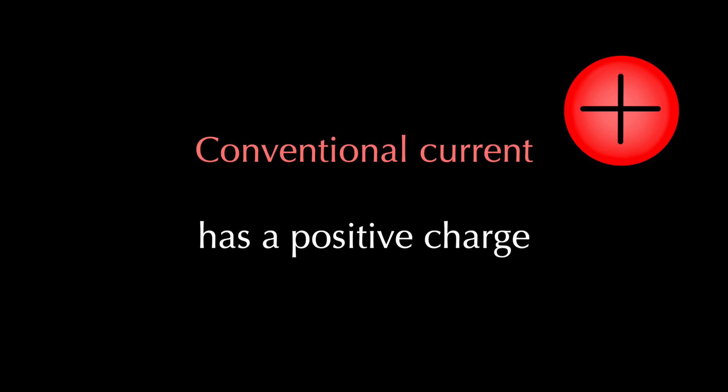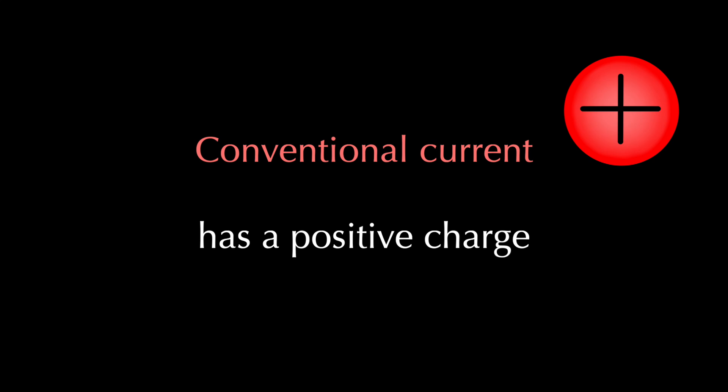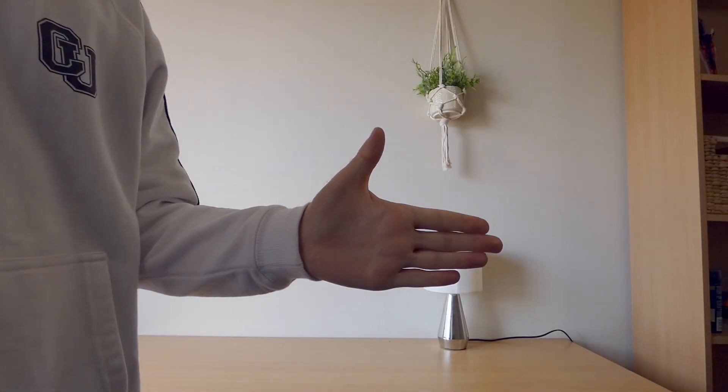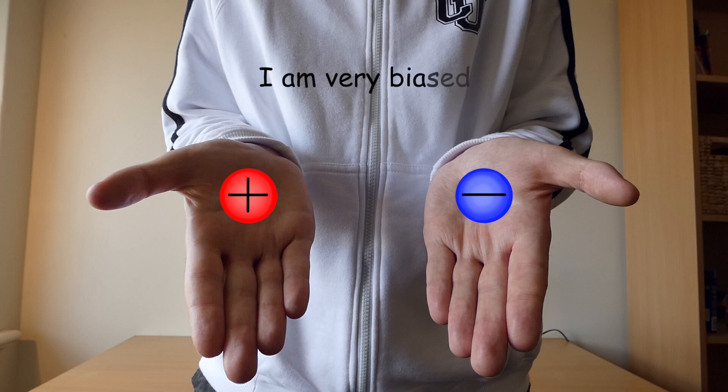My final point is that the right-hand slap rule works for positively charged particles. So what if the particles are negatively charged, like the electrons that actually move inside circuits? Well then, you just use your left hand. The right hand is positive, the left hand is negative. And yes, I am right-handed. How did you know?